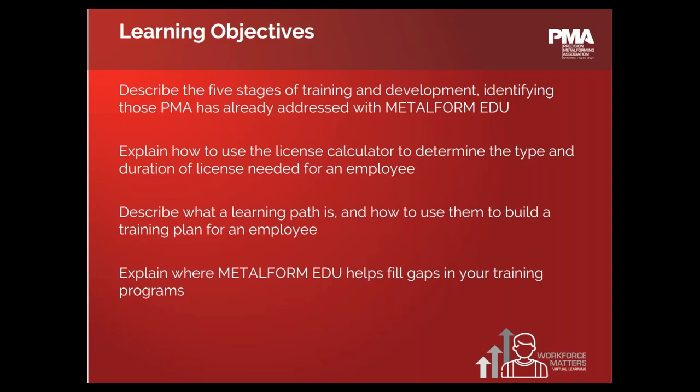I want to jump right in to today's webinar overview. After the webinar today you should be able to do the following things: first, describe the five stages of training and development and identify those that PMA has already addressed with Metal Form EDU; explain how to use the license calculator to determine the type and duration of license an employee might need; and talk about what a learning path is, how you can use them, and how you can build a training plan for an employee.